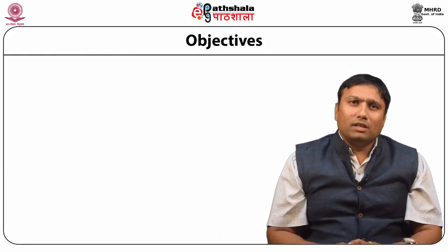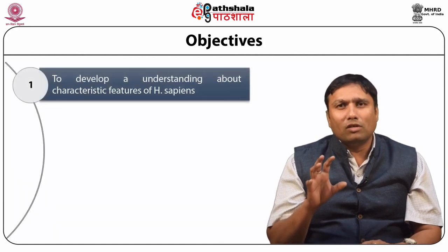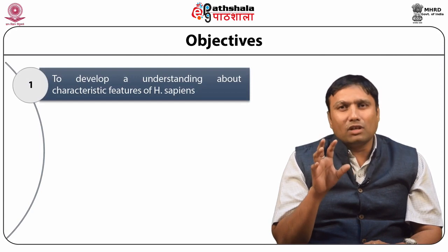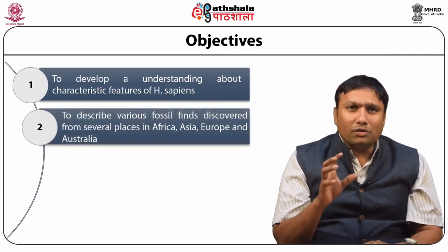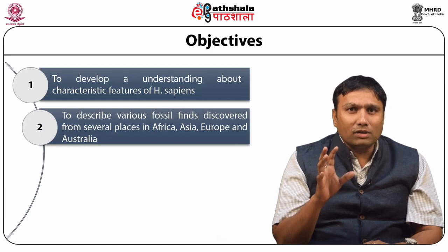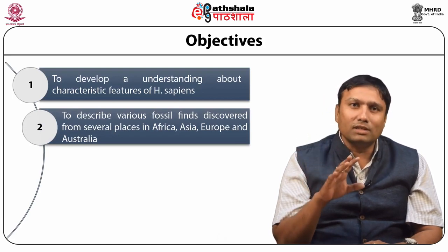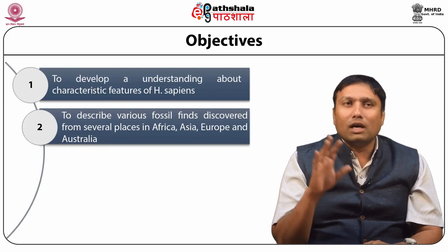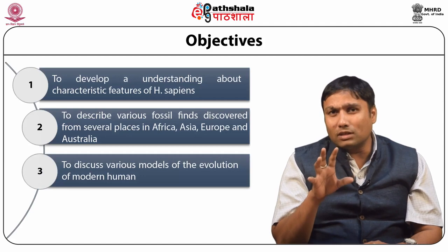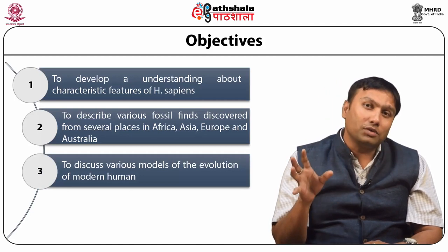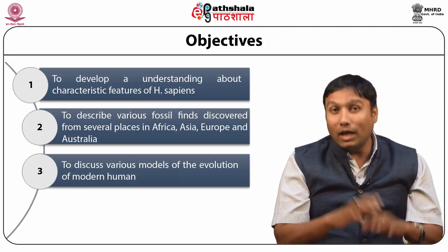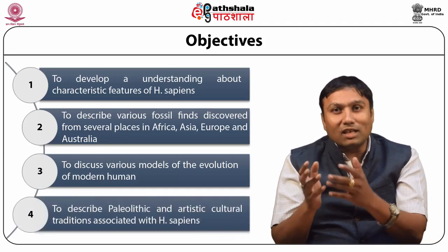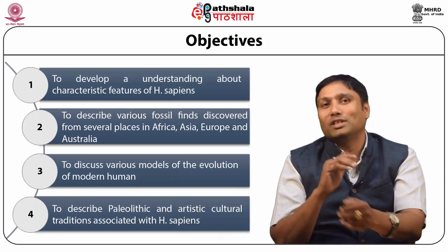In this module we are going to develop and understand the characteristic features of Homo sapiens. We will also try to describe the various fossils discovered from several places in Africa, Asia, Europe and Australia. We will also discuss various models of the evolution of modern humans and describe the Paleolithic and artistic cultural transitions associated with Homo sapiens.